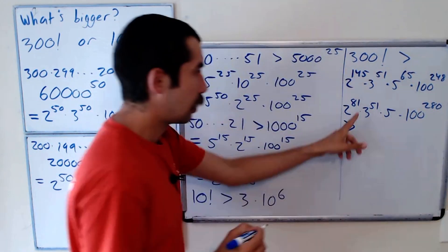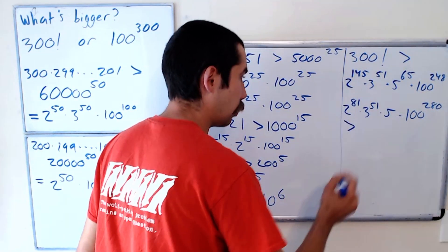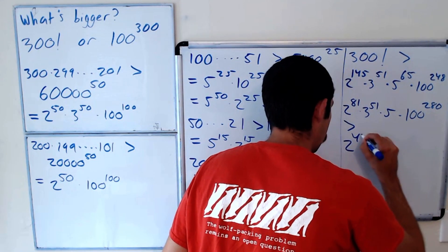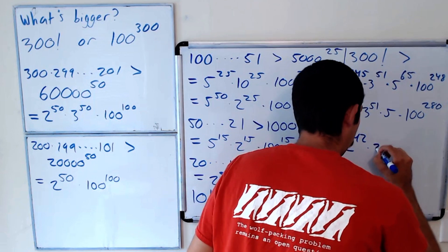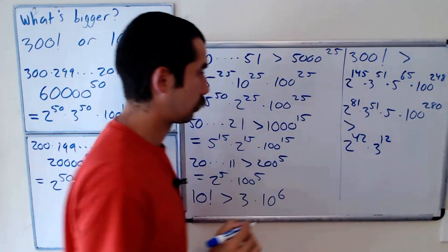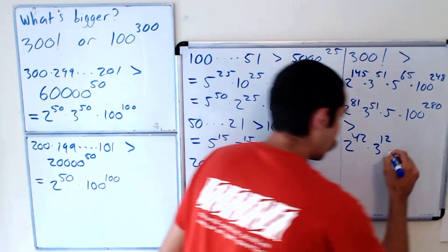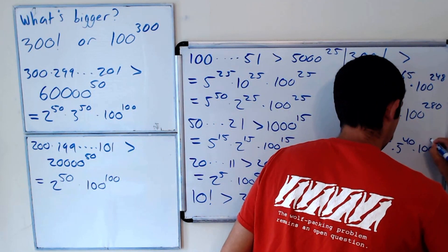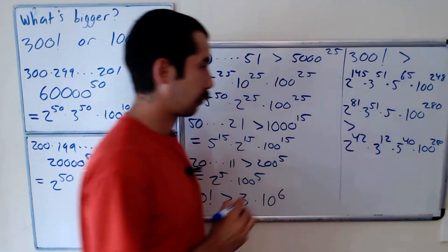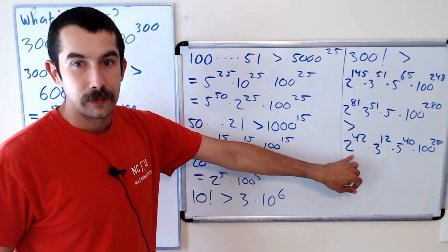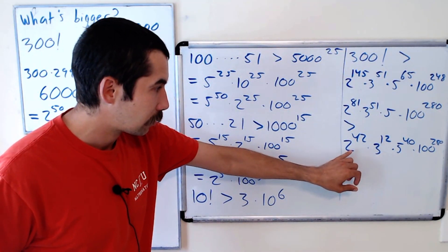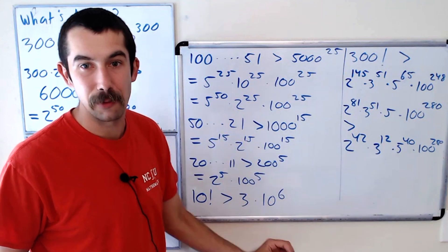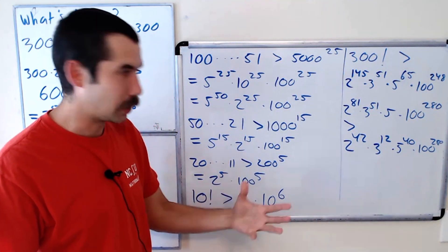So this is greater than taking out 39 factors of 2 and 3. That's 2 to the 42 times 3 to the 12 times 5 to the 40 times 5 to the 40 is 100 to the 200th power.